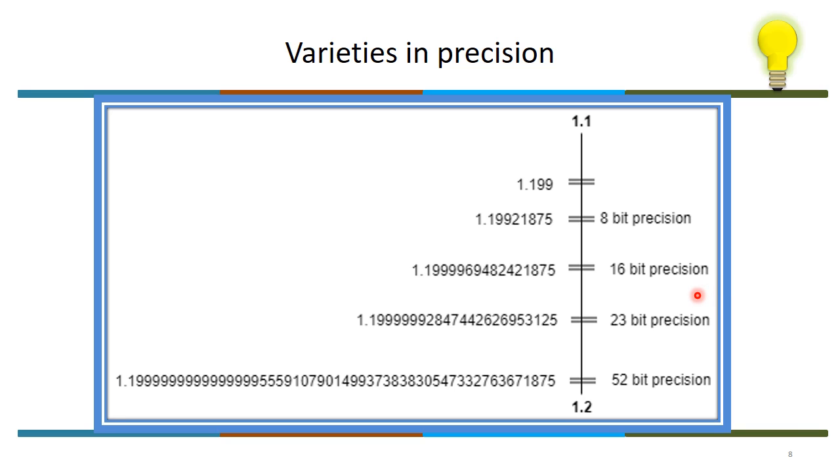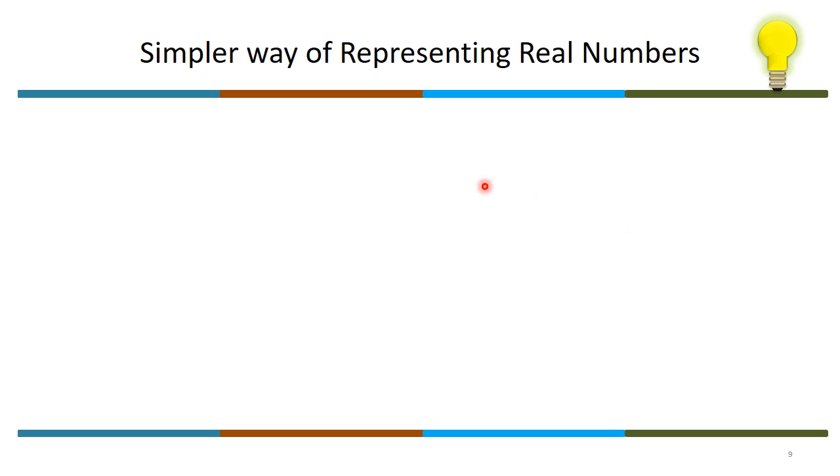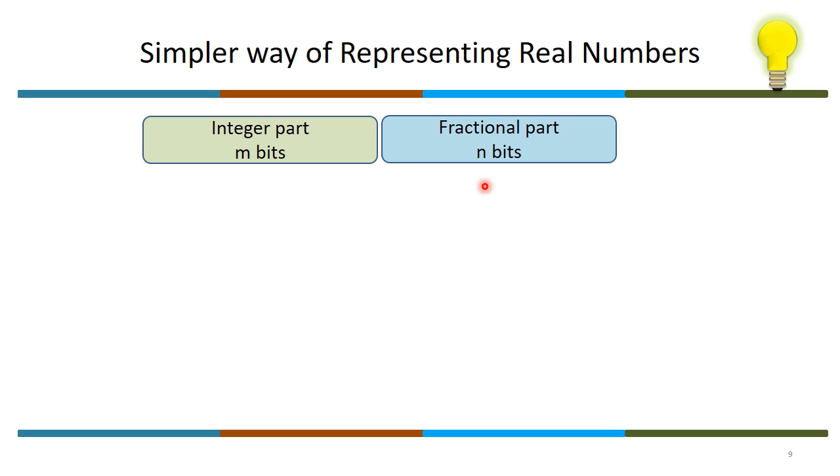How to represent these numbers? The simple way of representing real numbers is we take integer part separate and fractional part separate - m bits of integer part, fractional part of n bits - and we assume an imaginary or we assume a decimal point here.